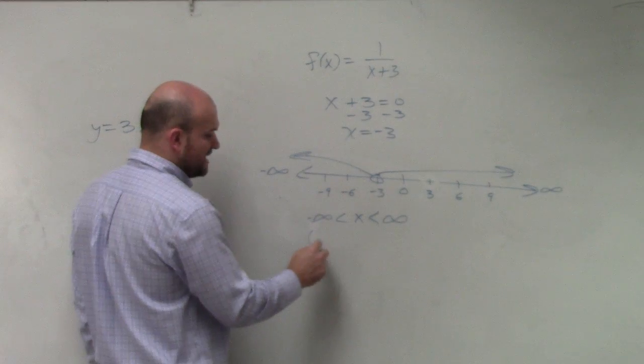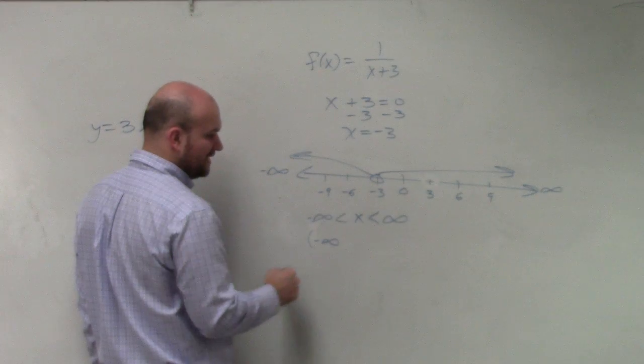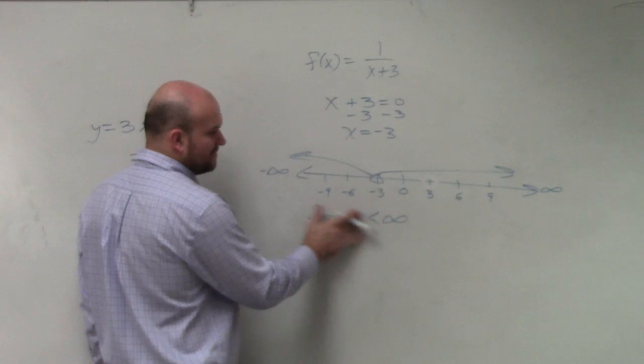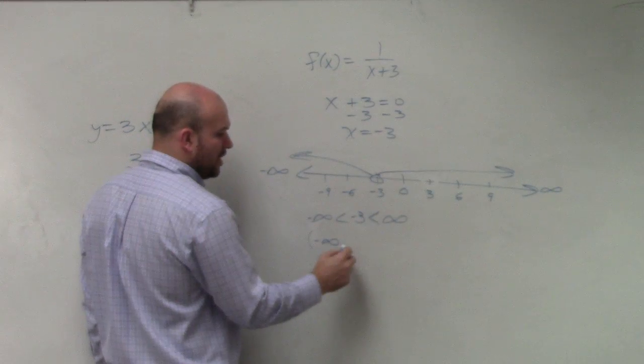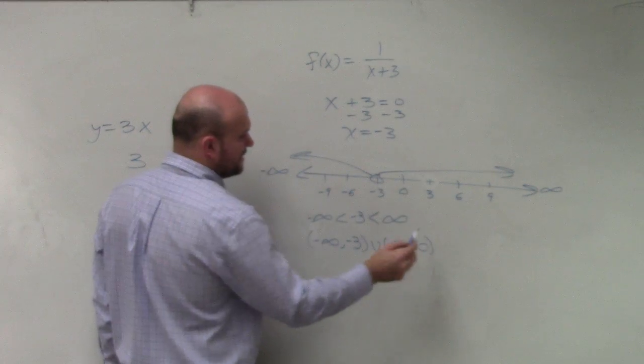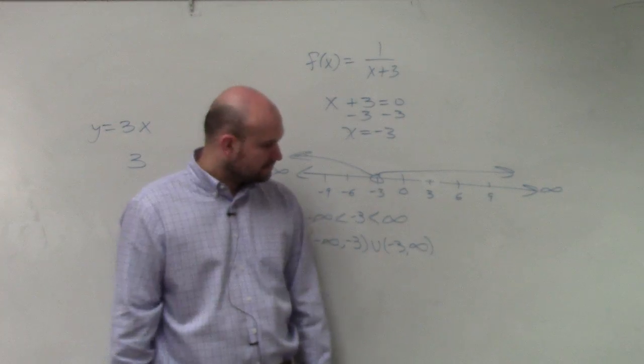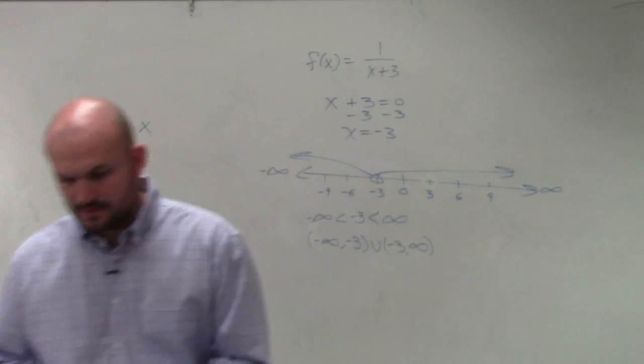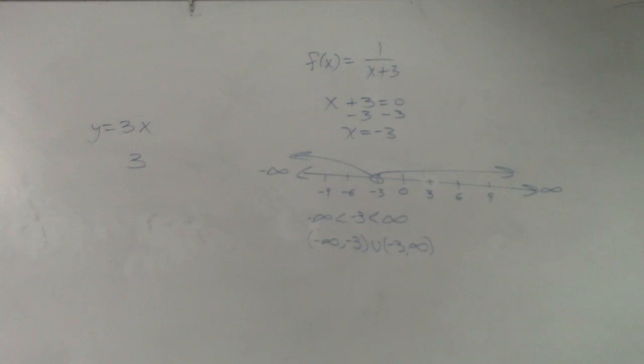To write it as interval notation, we say the farthest left is negative infinity, and it goes all the way to negative 3, union negative 3 to infinity, and that's it. Now, there you go.